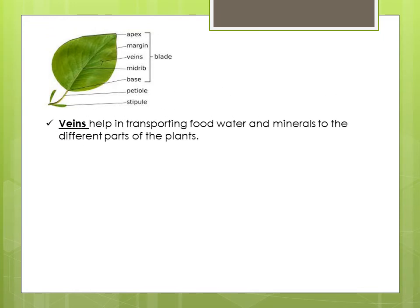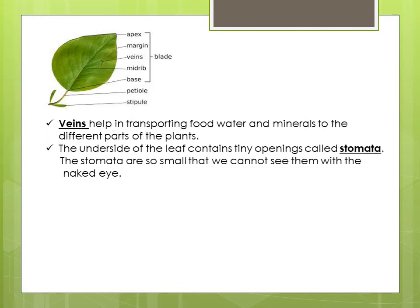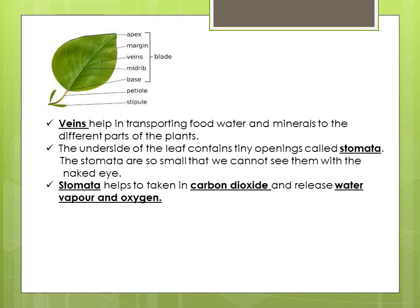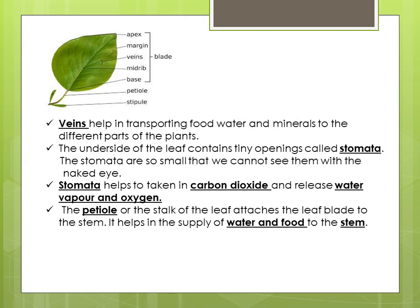Veins help in transporting food, water, and minerals to the different parts of the plants. The underside of the leaf contains tiny openings called stomata. The stomata are so small that we cannot see them with the naked eye. Stomata help to take in carbon dioxide and release water vapor and oxygen. The petiole, or the stalk of the leaf, attaches the leaf blade to the stem.